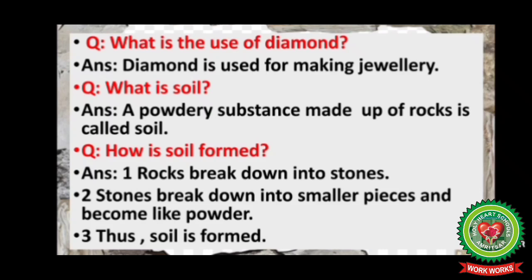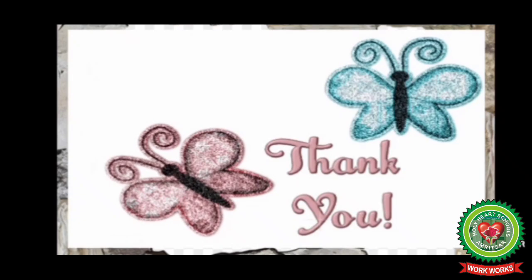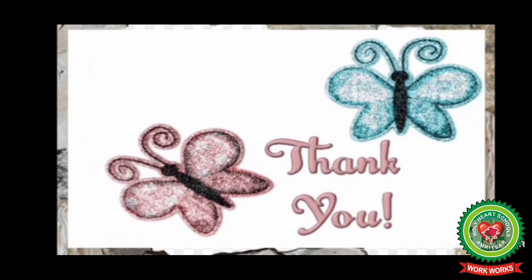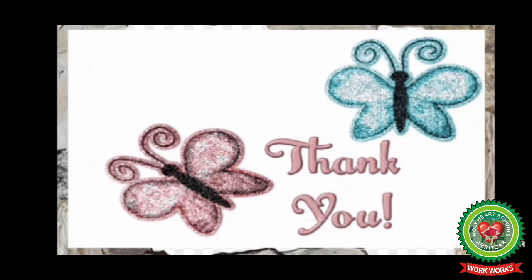Now let's discuss some questions. What is the use of diamond? Diamond is used for making jewelry. What is soil? A powdery substance made up of rocks is called soil. How is soil formed? Rocks break down into stones, stones break down into smaller pieces and become like powder — this is how soil is formed. In today's class we learned about different minerals, terms, questions, and word meanings.